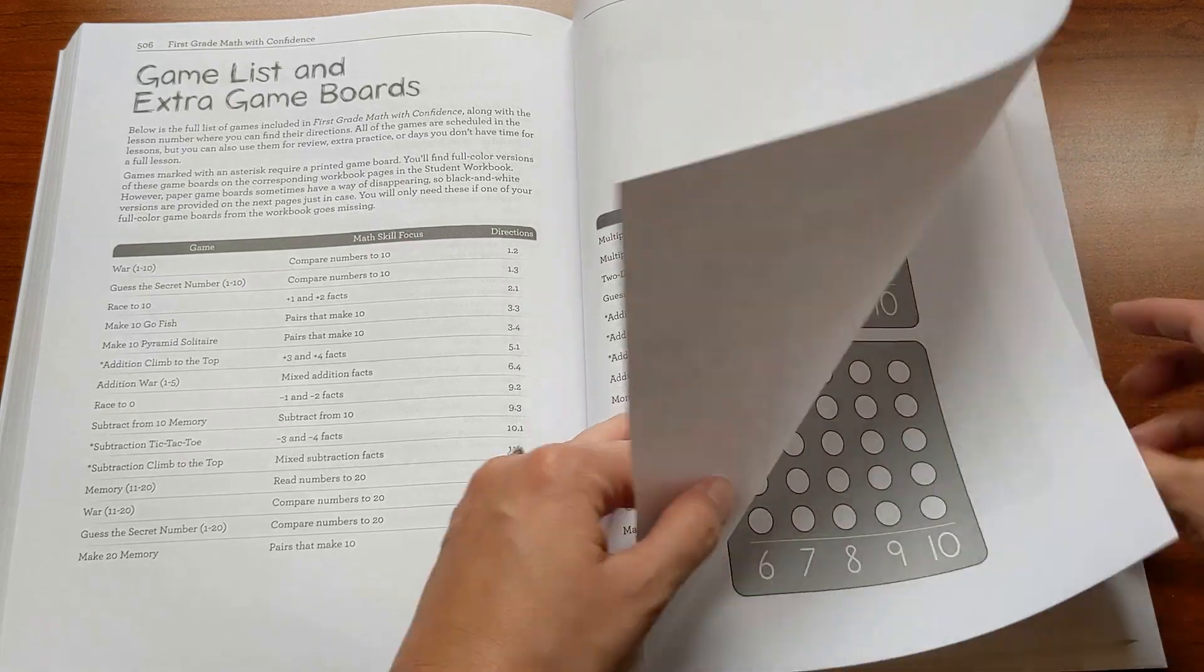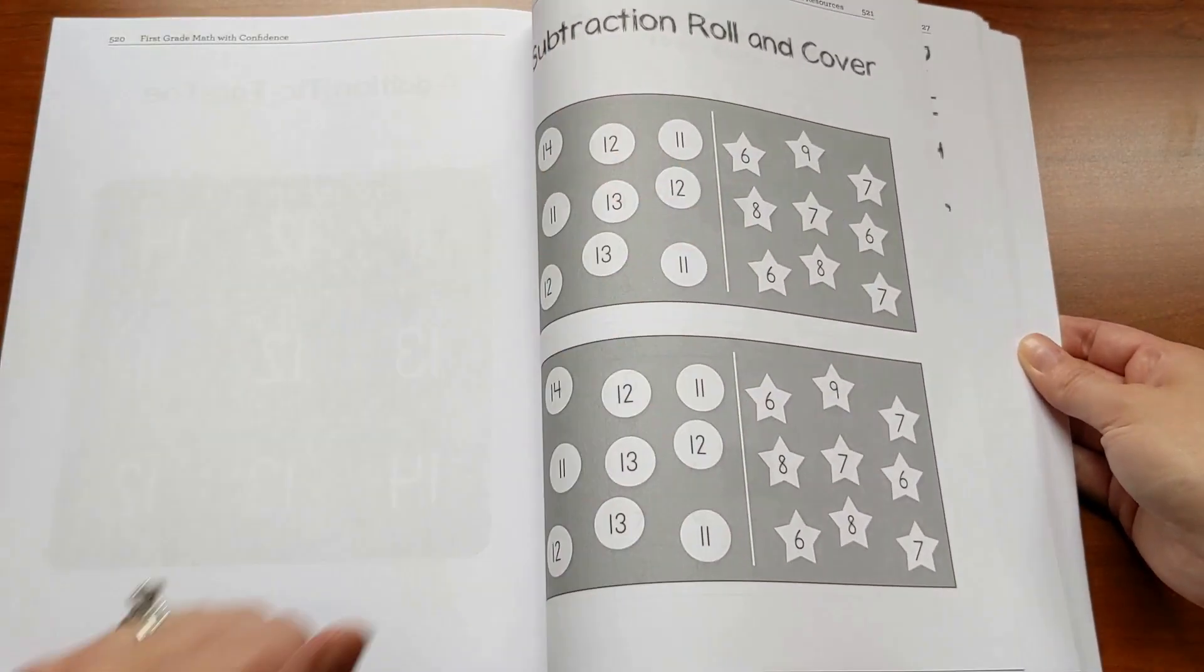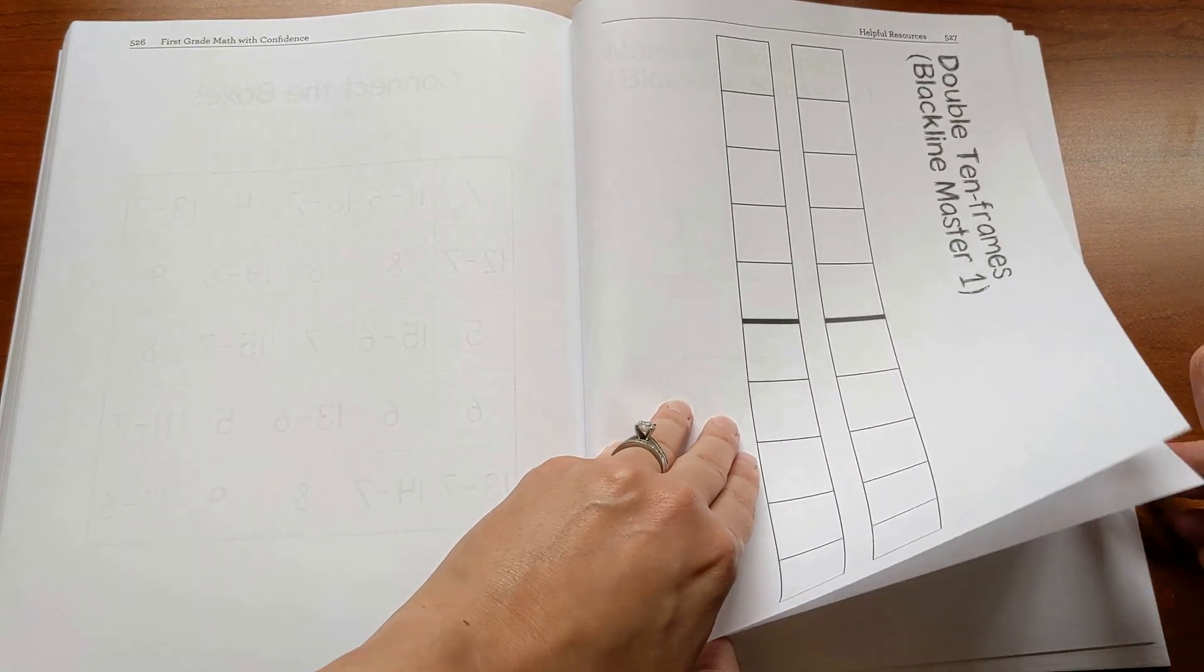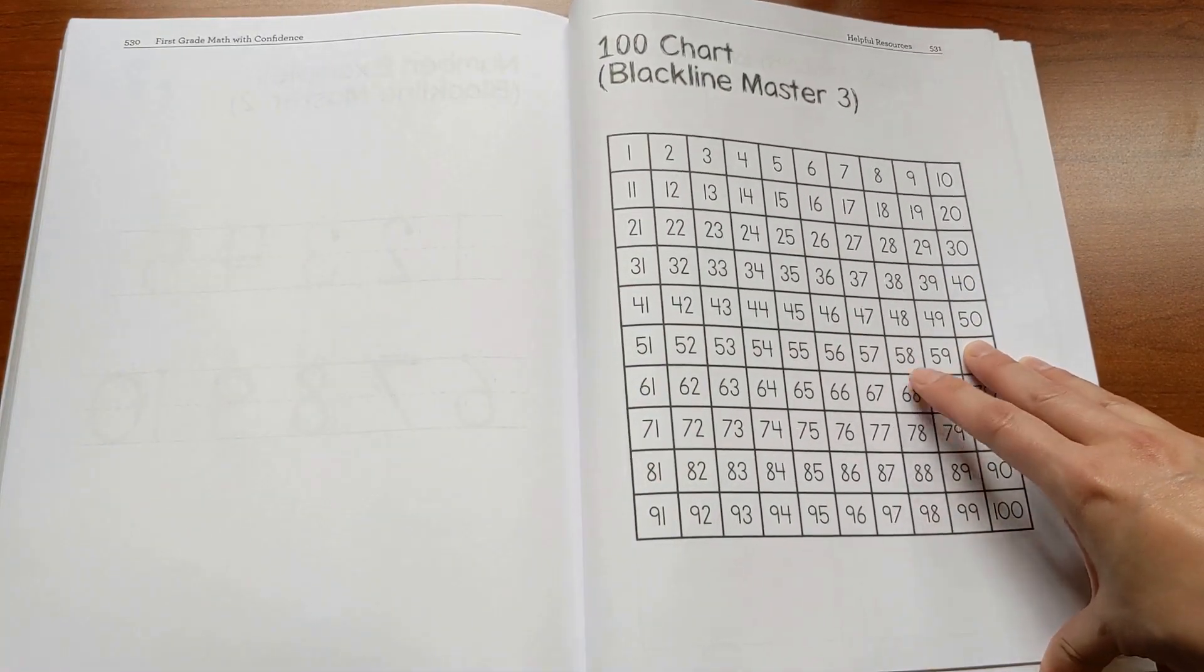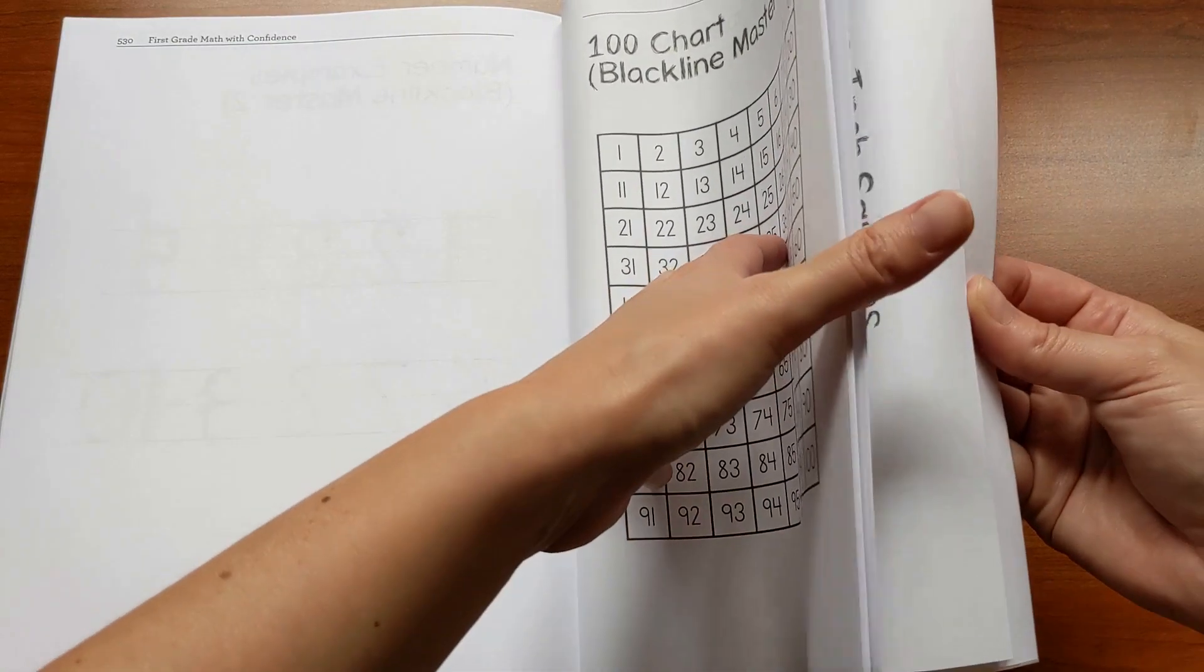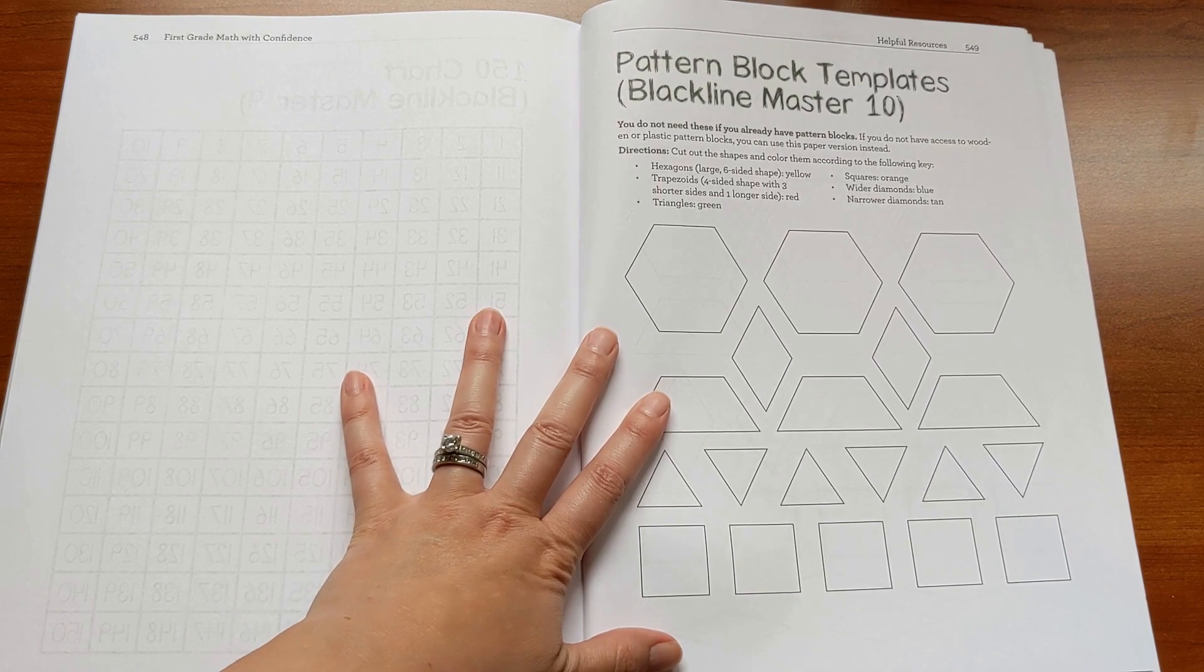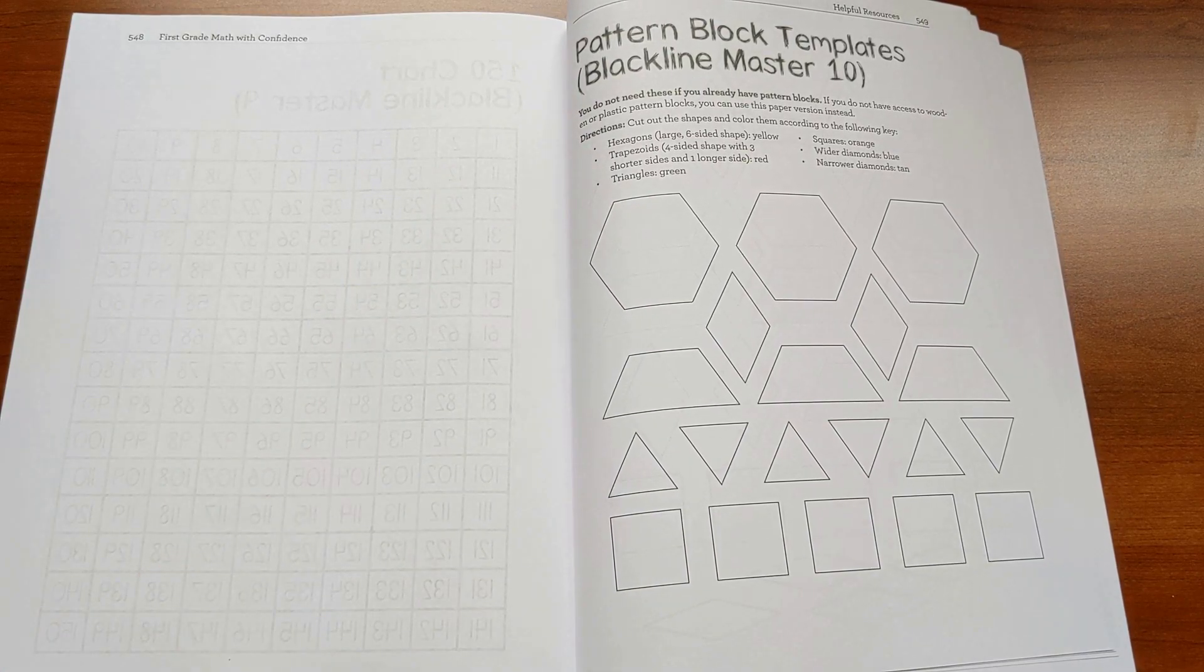There's also the game list and extra game boards in case you lose any throughout the year, because that happens sometimes. These are full color versions - these are all in the workbook. And then there's black line masters at the end. A few of these you'll use often throughout the year, like the double ten frames or the 100 chart, and I do suggest that you pull those out and put them in a plastic page protector and a binder to make it easy to keep track of them. And then there's also a few things at the back here. For example, if you're overseas or in a place where you can't get pattern blocks, I include templates in the back so that you can make your own. So you can truly use household items and what's in here to teach math with confidence.